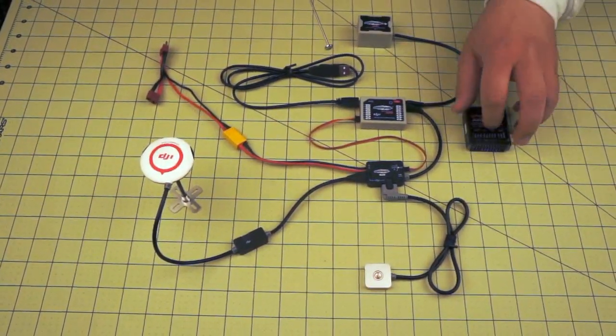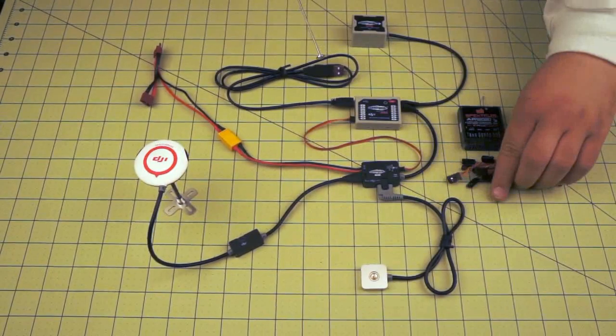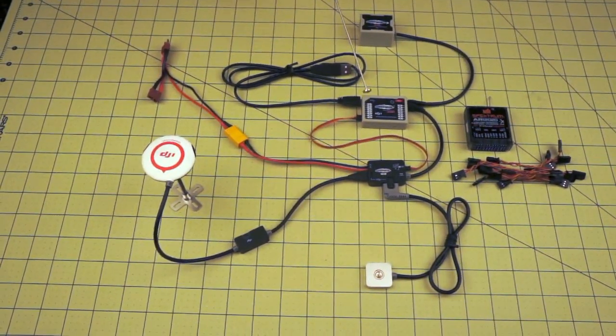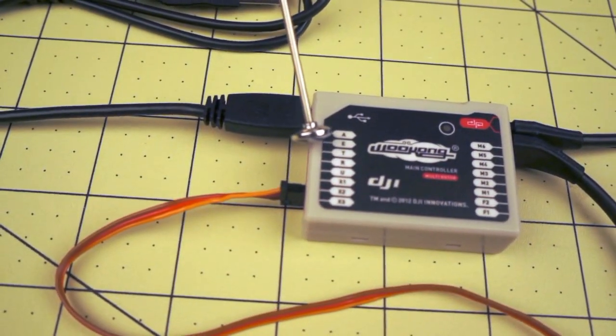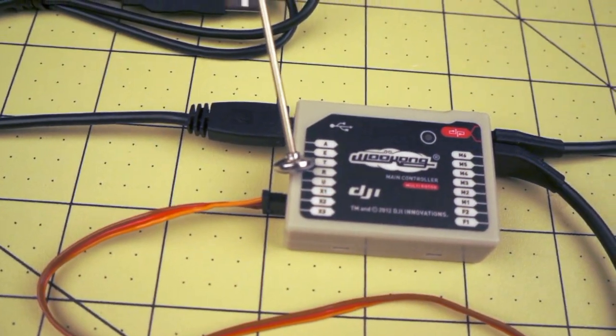Then we hook your receiver up with all these little wires over here. So aileron, elevator, throttle, rudder, accessories, good to go.